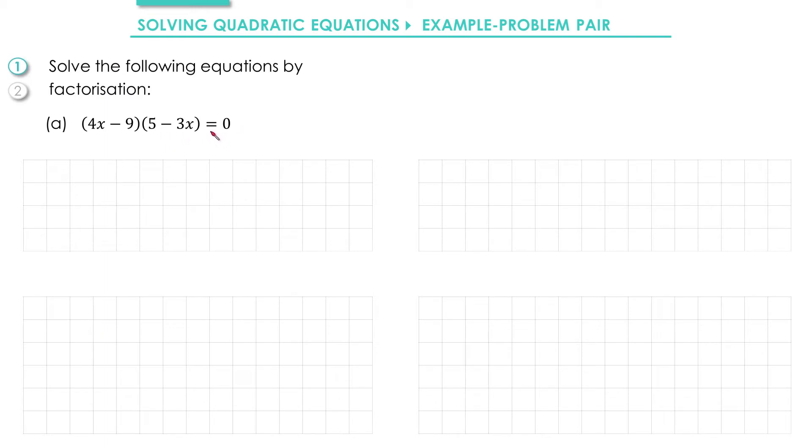A couple of things to notice here: first of all, one side of the quadratic is 0, that's something we always want to try and obtain. Second of all, this quadratic is already factorized. This makes life much easier, but a common mistake people make when it's in this form is they try to expand it out, they don't realize that it's already quite helpful to have it in this form.